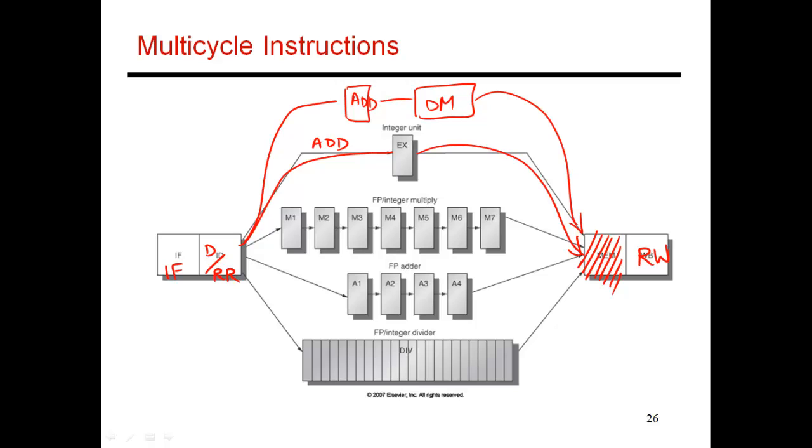If you are a multiply instruction, then you enter the seven stage pipeline of your own. So it takes seven cycles to finish a multiply operation and then you again go into the register write stage. If you are a floating point add operation, then you go along this stage which takes four cycles, five cycles, and then back into register write. Similar divide takes 25 cycles in this case. So now I have these many different instructions that can be handled, and each instruction is being handled by a slightly different pipeline, each with different lengths.